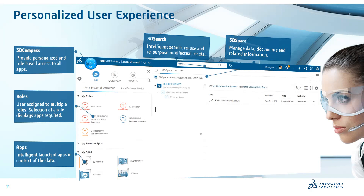The middle portion of the screen is the dashboard, which contains the 3D Space app. You can add tabs, similar to a browser, and perform different tasks on different tabs. You can also use multiple widgets to simplify, centralize, and display your data. The top right corner contains information about your profile, notifications, add, share, content, community, and the help section. This is the basic introduction to the user experience you'll have once you log into the platform.